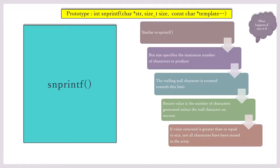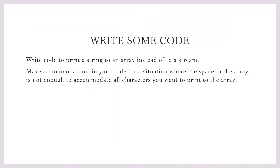Now what happens if the size is zero? Well then nothing will be written to the array — not even the null terminator. And str may be a null pointer, so you've got to be aware of that. Now write code to print a string to an array instead of to a stream, and make accommodations in your code for a situation where the space in the array is not enough to accommodate all the characters you want to print.